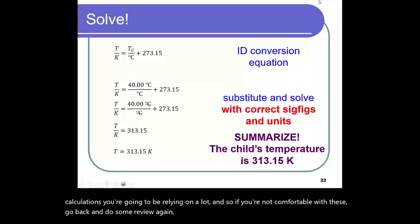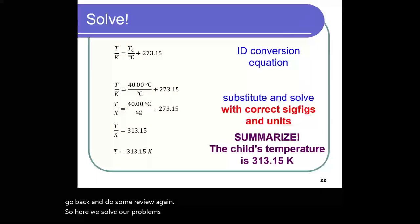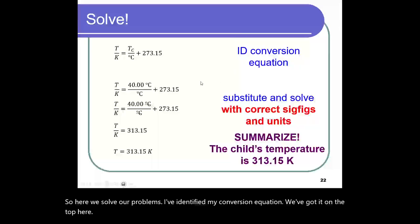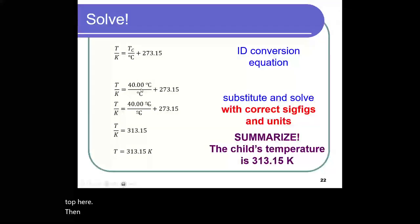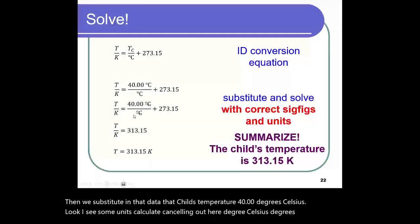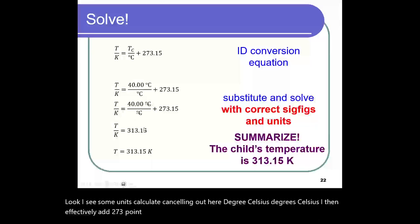So here we solve our problems. I've identified my conversion equation. We've got it on the top here. Then we substitute in that data, that child's temperature, 40.00 degrees Celsius. Well, look, I see some units canceling out here, degrees Celsius, degrees Celsius. I then effectively add 273.15 to the 40.00 degrees Celsius, and I got 313.15 Kelvin as units. And I can summarize that.